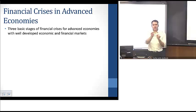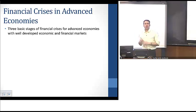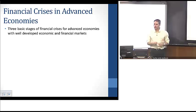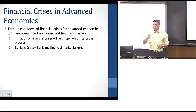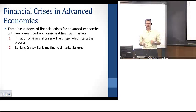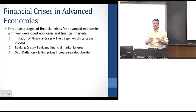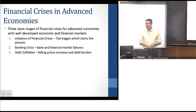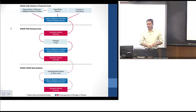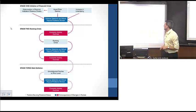We can look at financial crises in advanced economies and emerging market economies. We'll focus mostly on advanced economies. There are three basic stages: first, initiation of the crisis — what triggers it; second, that trigger leads into a banking crisis with bank and financial market failure; and third, potentially a debt deflation stage, where falling prices increase the real debt burden on households and firms, leading to further contraction.